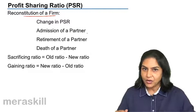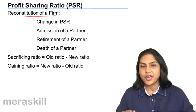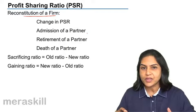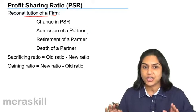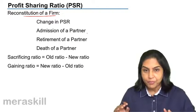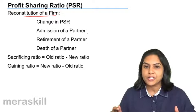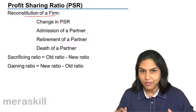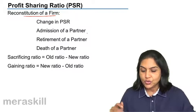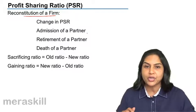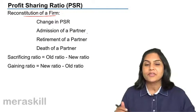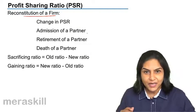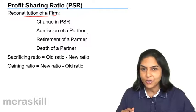That means A's share has now become one third, B's share is one third, and C's share is also one third. Previously, the existing partners had a share of half and half. So on admission of a partner, usually the share of the existing partners comes down.